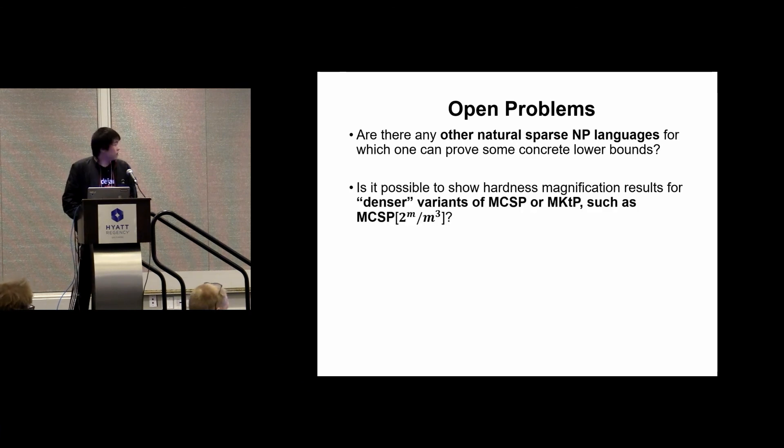The second question is that because in our proof and in some previous results, the magnification crucially relies on the sparsity of the language, it will be interesting to see if it is possible to get magnification for some denser variants of MCSP or MKTP, such as MCSP 2^m / m^3. Note that for this denser version, we know how to prove a cubic formula lower bound, but for sparse versions, we don't know.